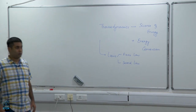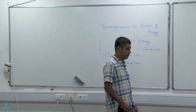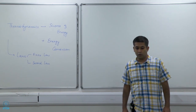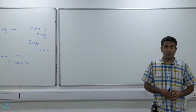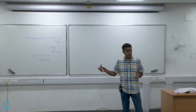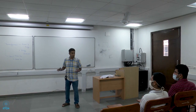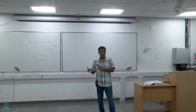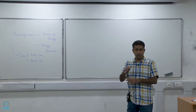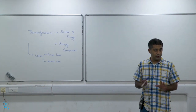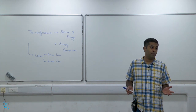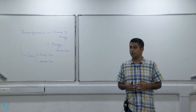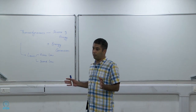What does the first law say? The first law is about the conservation of energy. The total energy in this universe is constant, and energy can be converted from one form to another — chemical to electrical, electrical to thermal, thermal to mechanical — all kinds of conversions are possible, but the total energy remains the same. System energy can change, but the total energy of the universe remains the same.